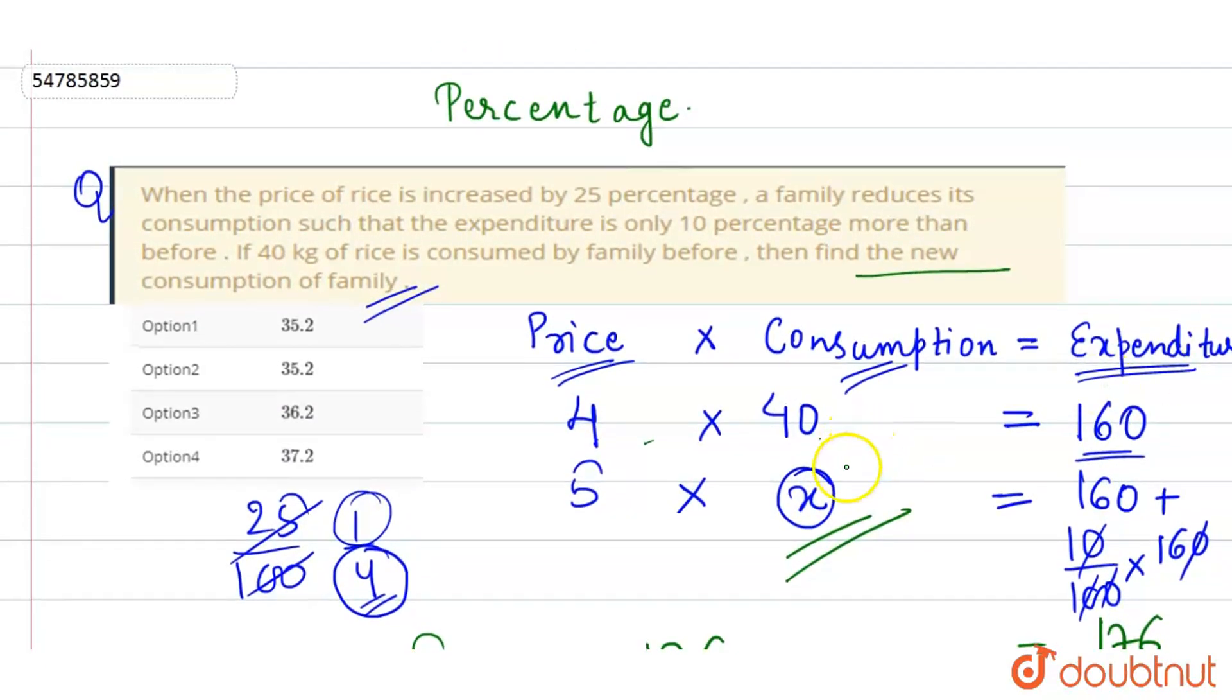That means they reduced their consumption from 40 to 35.2 kg. That's why their expenditure only increased by 10%. Now let's tick this in the options. Option number 1 is the correct answer, 35.2. I hope this question was clear to you. Thank you so much.